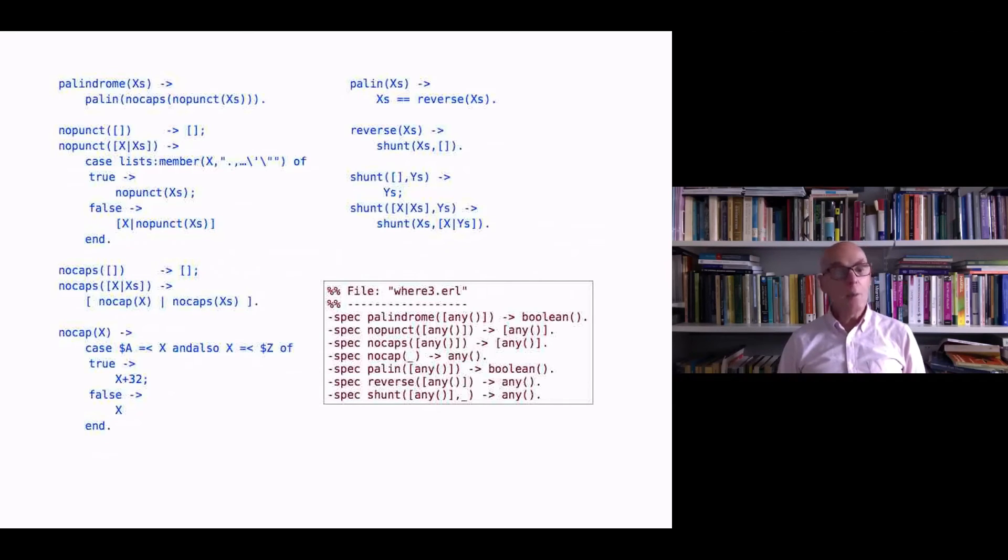Now actually if we want to give a more restrictive specification we can. We can say we know that if we apply palindrome to a string we'll get a boolean. And if we do that and then run Typer again, you'll see that Typer accepts that spec because it's the one that we have specified. It only accepts it if it is consistent with what it already knows.